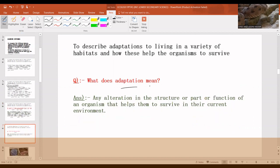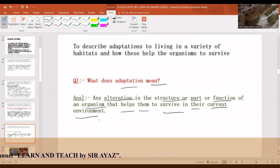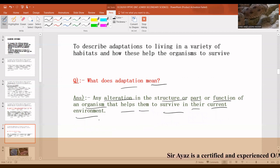What does adaptation mean? Any alteration in the structure or part or function of an organism that helps them to survive in their current environment. It's a kind of alteration in their structure, any part of the body or function of the organism that helps them survive in the harsh environment.